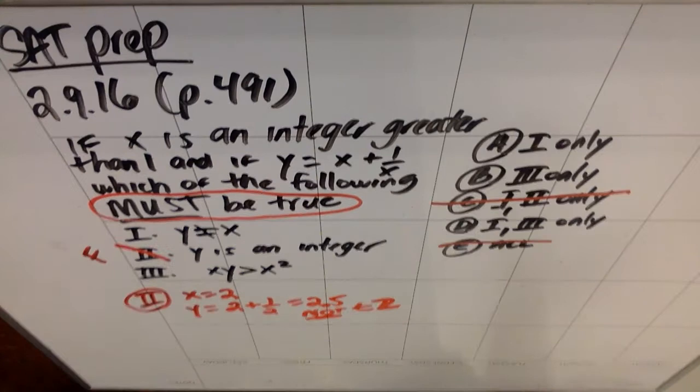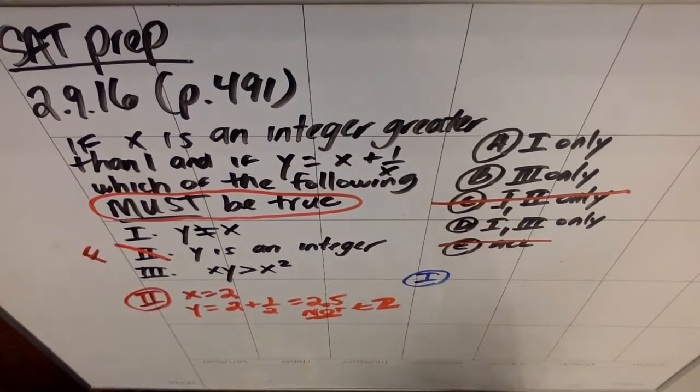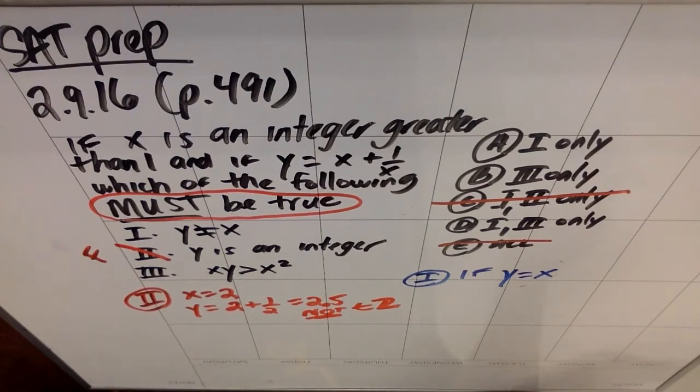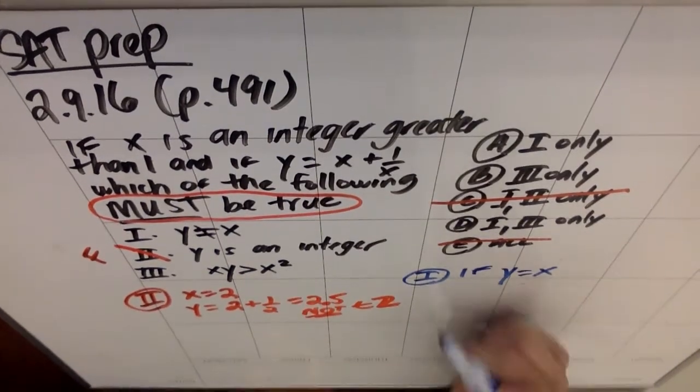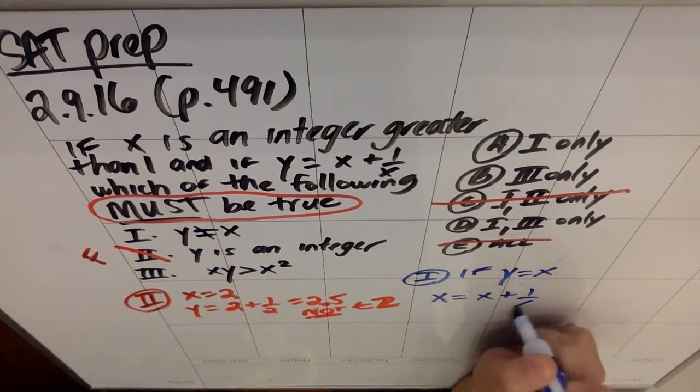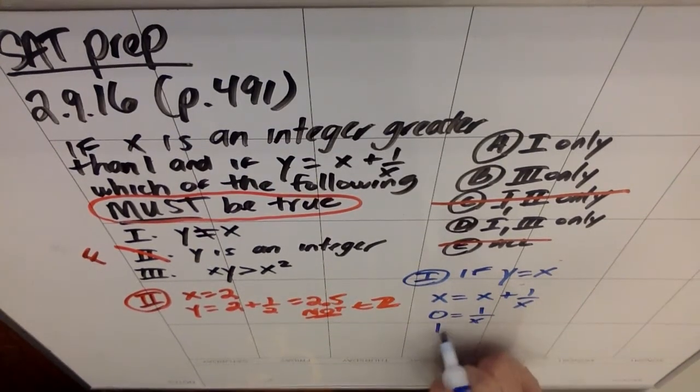So unfortunately, I'm going to have to go through some work to figure out if one and three are true. So here's what I know. Let's look at number one. So in number one, they said to show that y does not equal x. Well, I'm going to see what happens if I try the reverse option. What if y was the same as x? If y were to be the same as x, I could say x equals x plus one over x. And when I subtract this x to the other side, I get zero equals one over x. Well, that's a big fat lie.